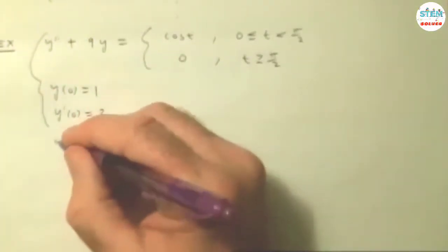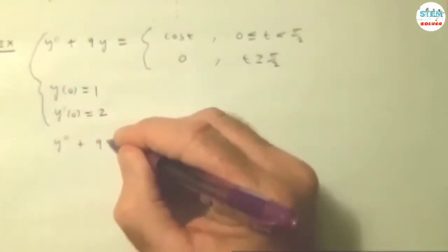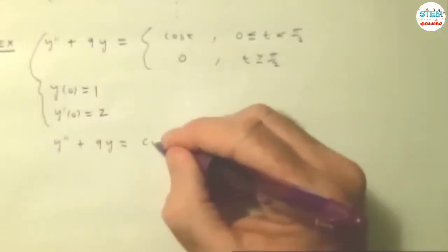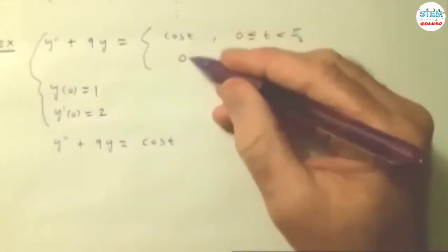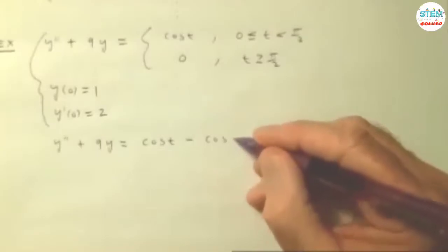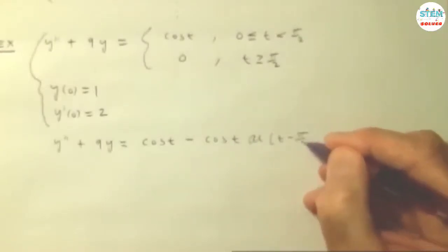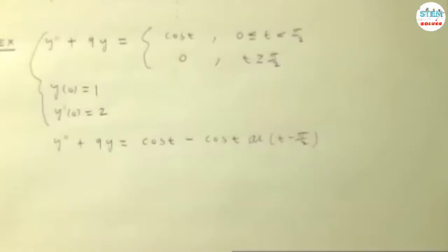Now we're going to write it as one line using a unit step. So we have Y double prime plus 9y is going to start off being cosine of t. We want it to go away, so we subtract cosine of t times u of t minus pi over 2.